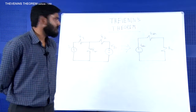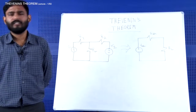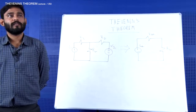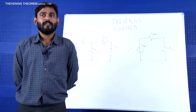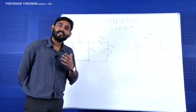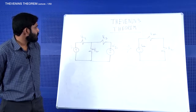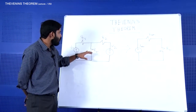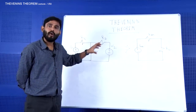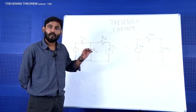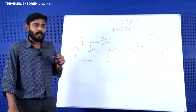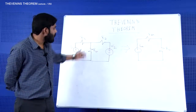First of all, it's a simple circuit, so you can apply KCL, KVL, or any basic network analysis technique and get a standard result. But consider a different scenario: we have to analyze what amount of current is flowing through this path or what voltage is generated across it, even as we change the resistance R.